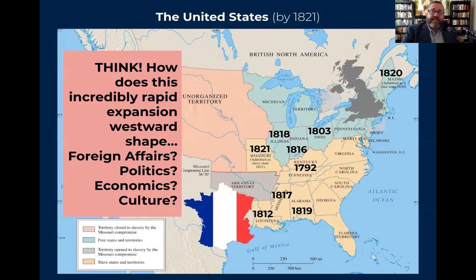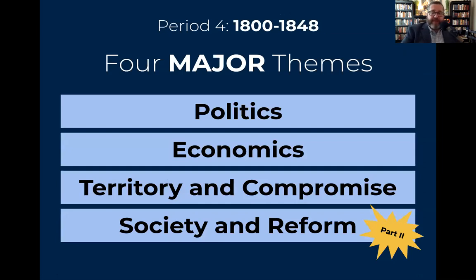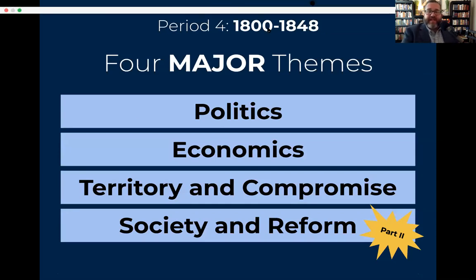The United States is going to see monumental cultural change during this time period. There are your four major themes: politics under Jefferson, economics under Henry Clay and Jefferson, territory and compromise, and society and reform — that duplicitous, plural nature of society seen in the Second Great Awakening and transcendentalism. That's it for Period 4, Part 1. I thank you for taking time out of your busy schedule to join me. Hope this was a purposeful use of your time and helpful in understanding Period 4. When we get back together next time, we'll talk about Andrew Jackson. In the meantime, be well, be wise, and keep learning.